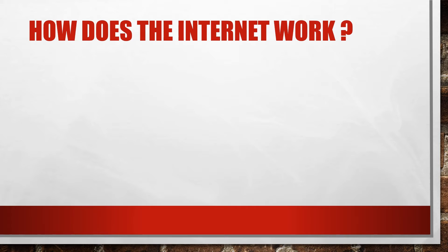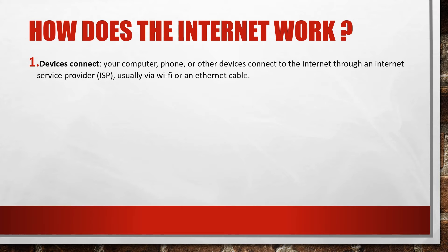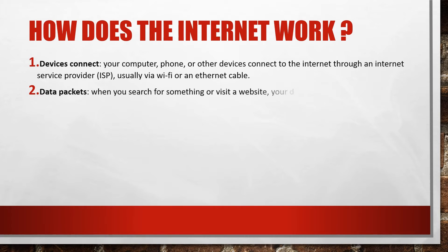So how does the internet work? There are many steps to discuss. First, devices connect — your computer, phone, or other devices connect to the internet through an internet service provider (ISP), usually via Wi-Fi or an ethernet cable. Then, when you search for something or visit a website, your device breaks down the request into small packets of data.